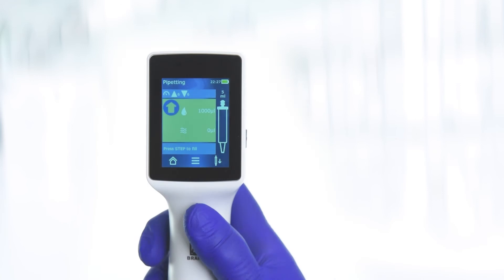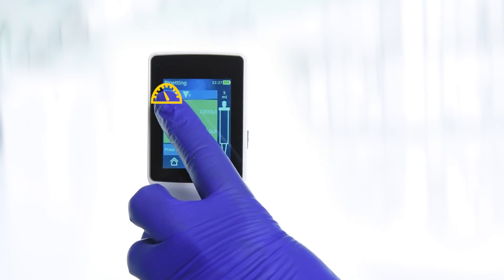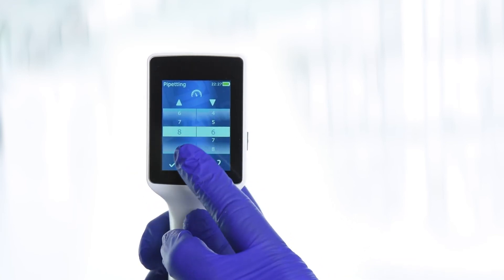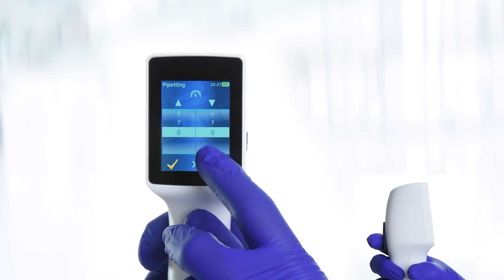To set the desired aspirating and dispensing speeds, tap the speedometer icon. Set the desired aspirating and dispensing speeds by swiping vertically up or down. Then tap to confirm.